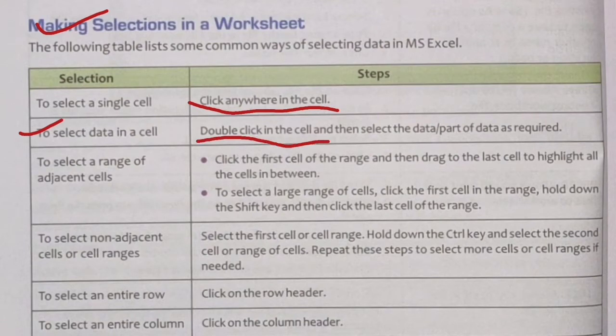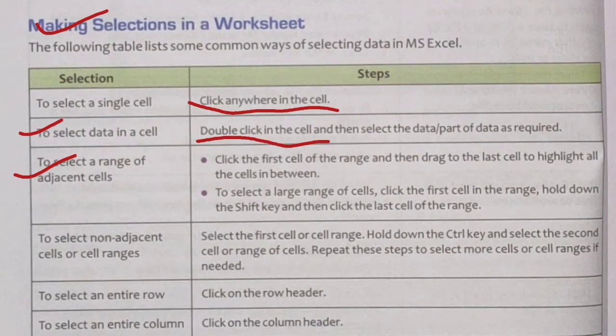If we want to select a range of cells, click on the first cell to highlight it, then drag the mouse to the last cell. To select a large range of cells, click the first cell in the range, hold down the Shift key, and then click the last cell of the range.